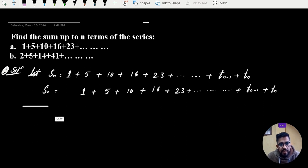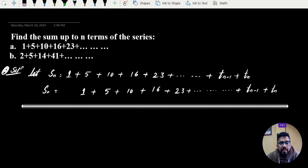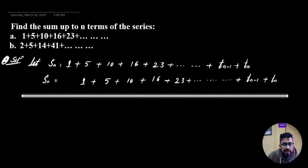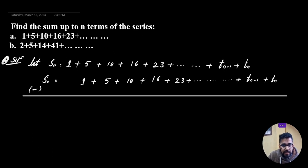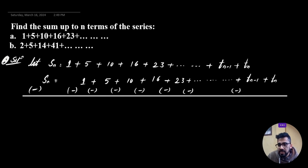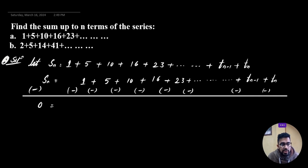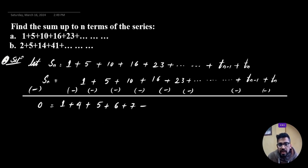We subtract the shifted equation from the original. The first term gives 1. The differences are: 5 minus 1 is 4, 10 minus 5 is 5, 16 minus 10 is 6, 23 minus 16 is 7, and so on. So tn equals 1 plus (4 + 5 + 6 + 7 + ...).